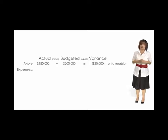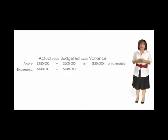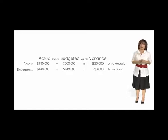Now let's look at expenses. Assume the same company budgeted expenses of $148,000; however, actual expenses were only $140,000. When budgeted expenses are subtracted from actual expenses, we arrive at a negative amount of $8,000. However, for expenses, a negative amount is favorable. This is because a business prefers to reduce, not increase, expenses.